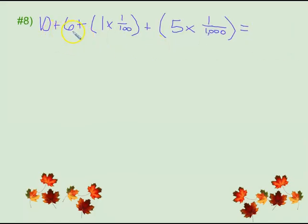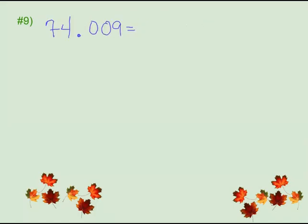Number eight: we have ten plus six plus (one times a hundredth) plus (five times a thousandth). How do you think that one would go? Look — we have some whole numbers already in expanded form, so how would you write them together? Big challenge: can you write this in standard form like we've been doing? Remember, you have examples a couple minutes back — don't be afraid to use them. And last one: nine and five hundred three thousandths. How would you write that in expanded form? You got this — don't be afraid to use those examples.